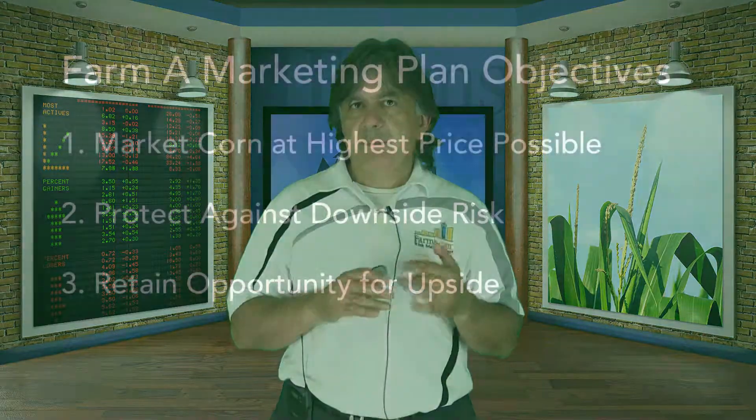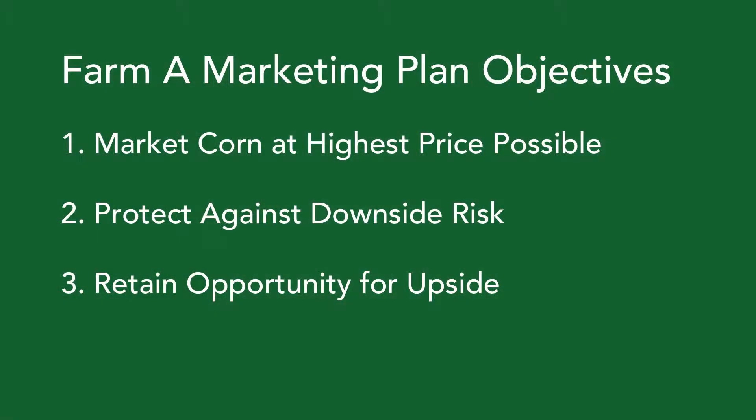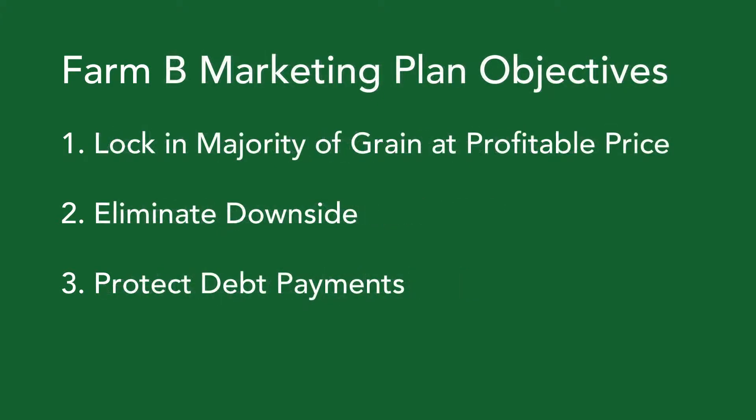For example, both Farm A and Farm B can lock in $4.20 per bushel. Farm A's possible objectives include: obtain the highest price of the season, protect against downside risk while retaining the opportunity for upside movement, or a combination of the above.